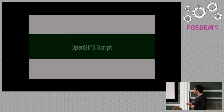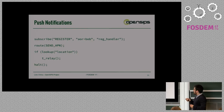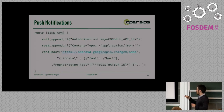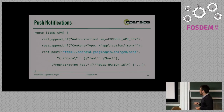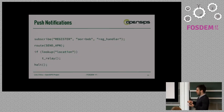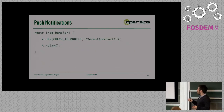Jumping into some OpenSIPS script — things would kind of look like this. We subscribe to the AOR and this is how the push notification code would look like. We append some headers and make a POST using the REST client module. Then we fork to his existing branches and hold the execution. The handler is also added — once the events start arriving, so the registrations, we can do the appropriate checks.